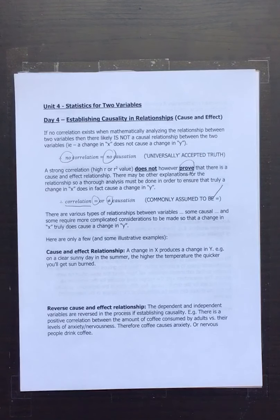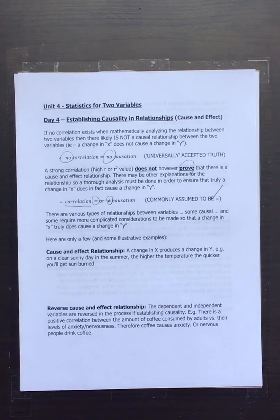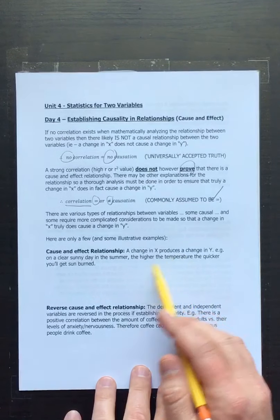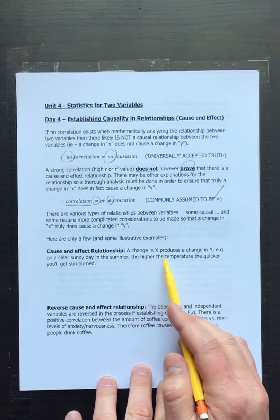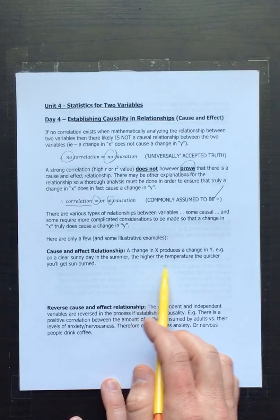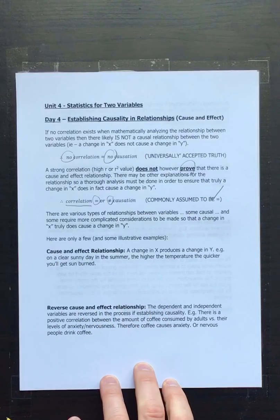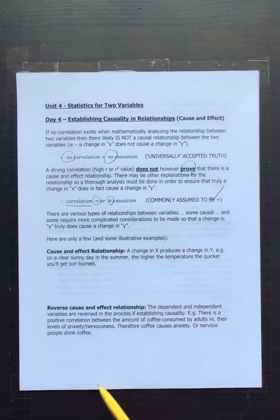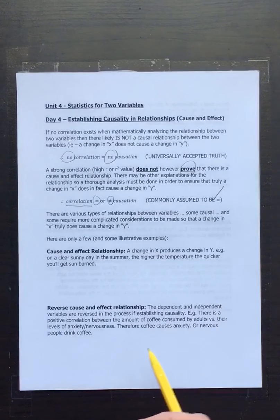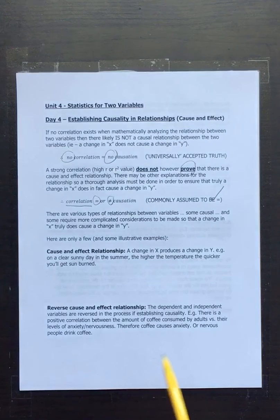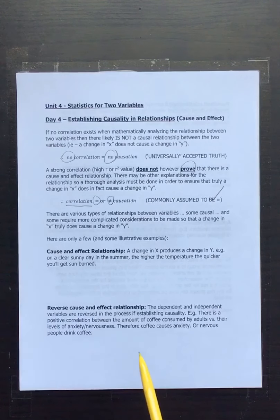Performance on tests is also not a perfect science, so all kinds of other factors could play a role. The textbook also gives another clear example: on a clear sunny day in summer, the higher the temperature, the quicker you'll get sunburned — a correlation between temperature (or UV index) and sunburn. That's a direct causality; generally one directly causes the other.